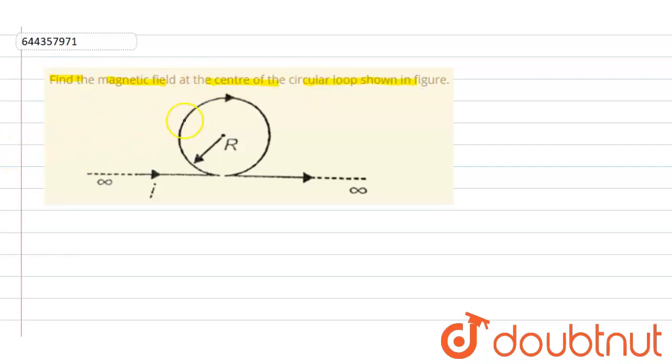So here let us consider the magnetic field due to circular loop will be B1 and due to this infinite wire is B2.